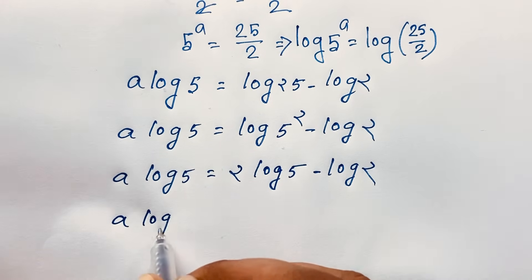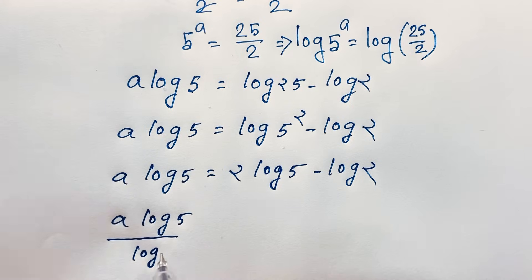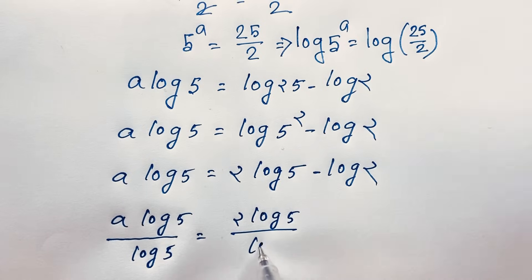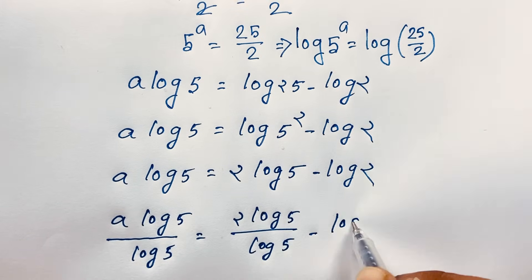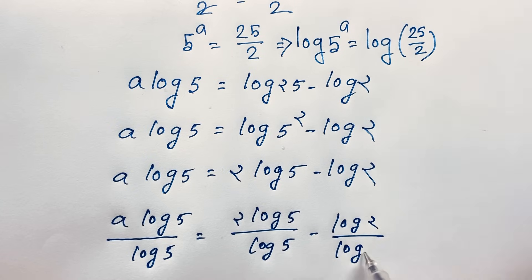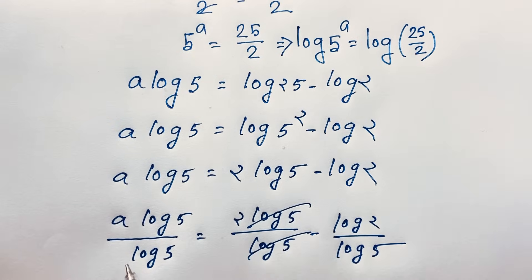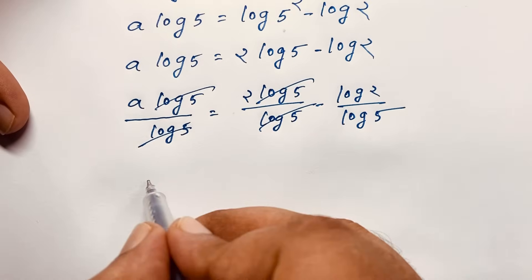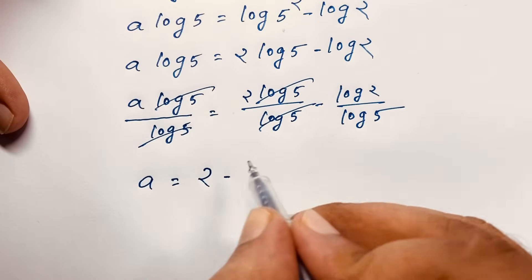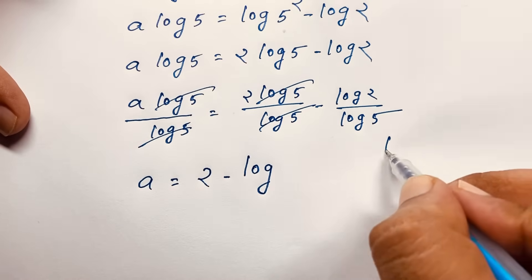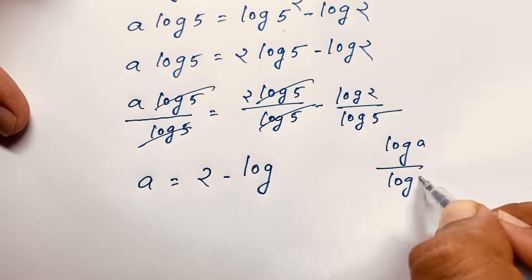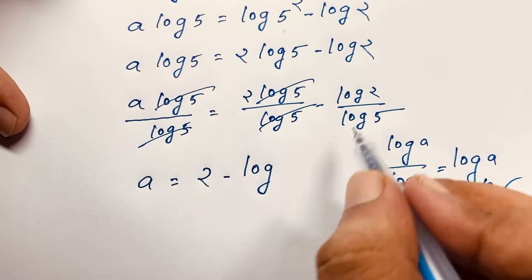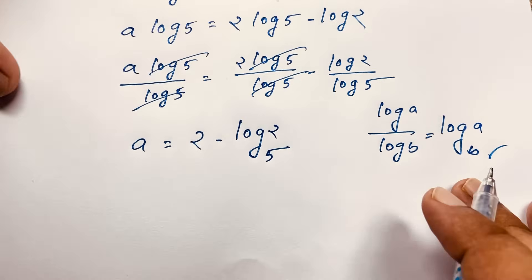After dividing, the log 5 terms cancel out, giving us a equals 2 minus log 2 over log 5. Applying the change of base formula — log a over log b equals log base b of a — this becomes a equals 2 minus log base 5 of 2. That is our final answer.